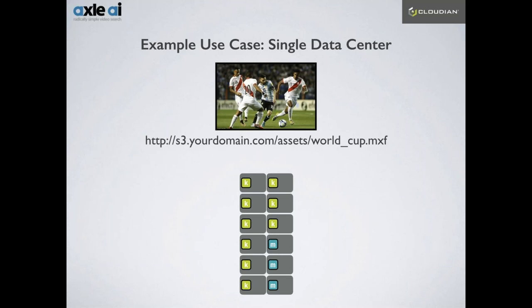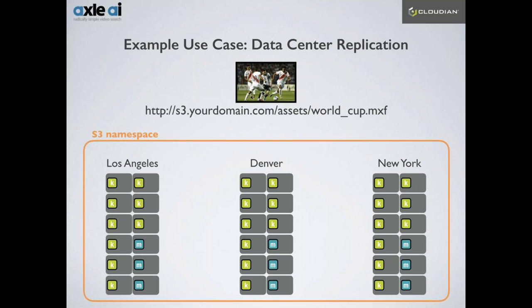As a use case example: a business has a video asset of a World Cup match they want to archive into object storage. They write it into their object store — say a data center in Los Angeles — and it distributes all shards across nodes for protection and resiliency. That asset is protected and highly available on the Los Angeles network.